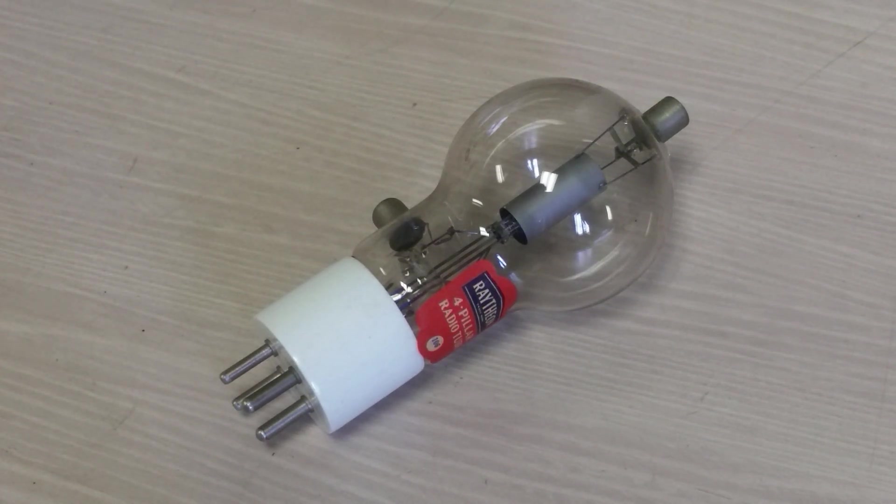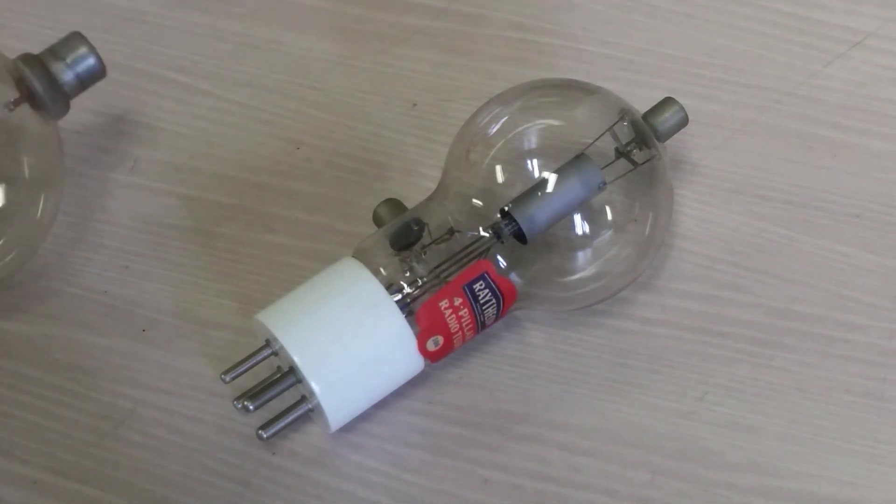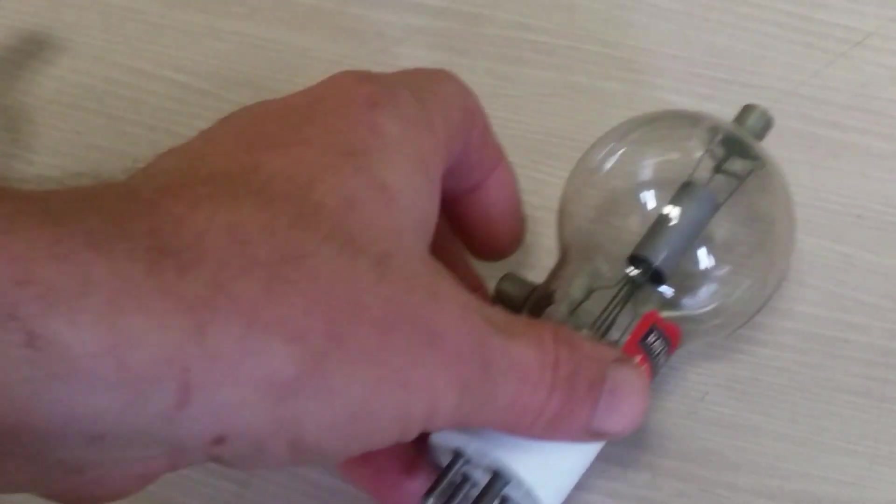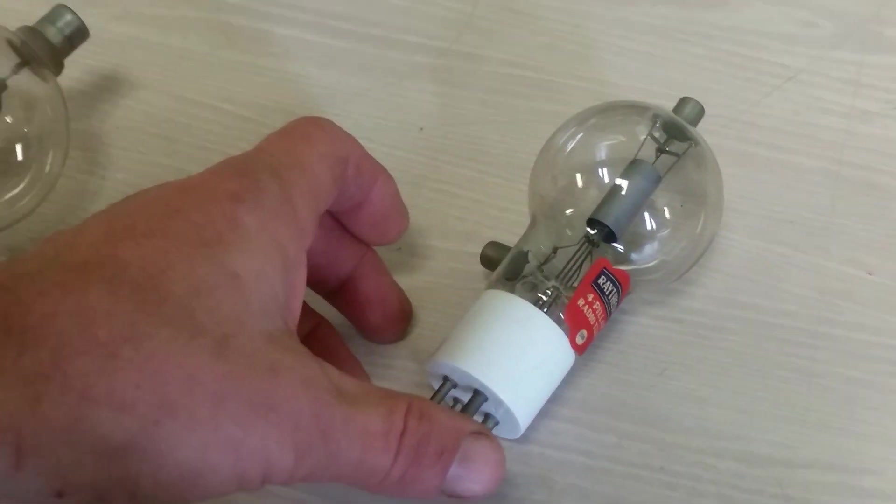Now, the first thing you might say is, gee, that looks like an 808. 808, which I have one right here. And let's open the 808 up and compare the two, because they are very, very similar. Incidentally, this 808 was one of the very first tubes that I purchased from Fair Radio Sales. So, let's move you over.